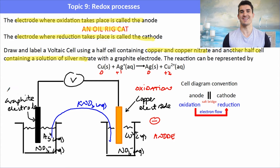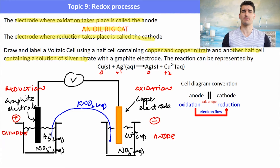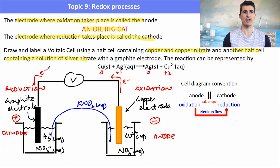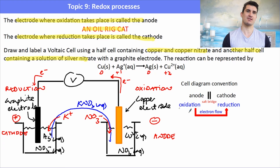Because copper is oxidized, it is the negative electrode — the anode. The silver half cell undergoes reduction, so it is the cathode and is positively charged. Electrons therefore flow from the copper to the silver, left to right. In the salt bridge, the nitrate ions (anions) move towards the anode to balance the build-up of positive charge, and the potassium ions (cations) move towards the cathode to balance the build-up of negative charge.